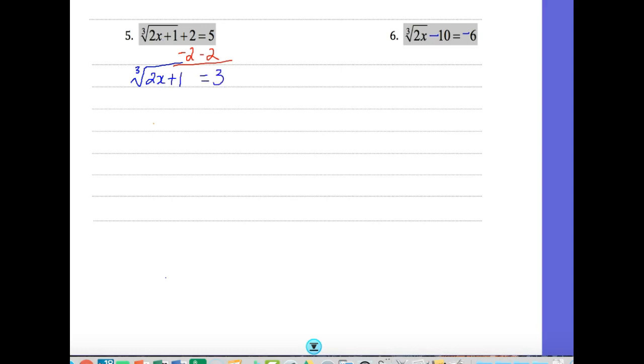Now there's nothing on the outside. Here's the big difference. To undo a cube root, you have to cube both sides. Whatever that index is, that's what you're going to raise each side to. So it's a little different than square roots. We're going to be left with 2x plus 1 equals 27.